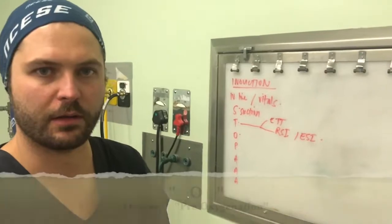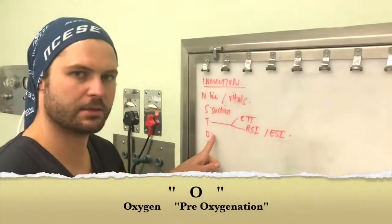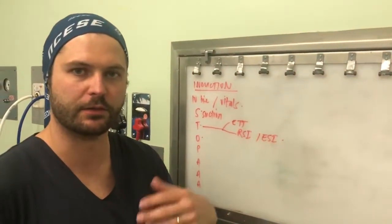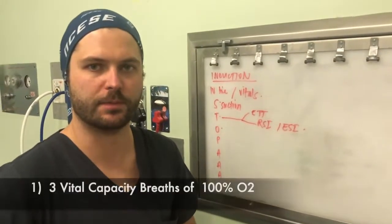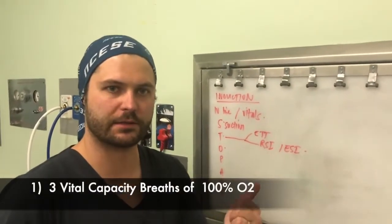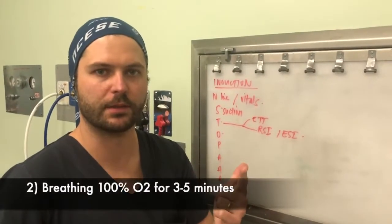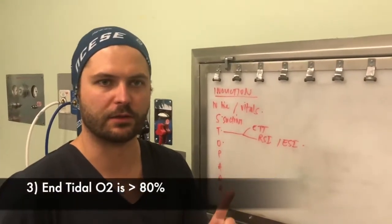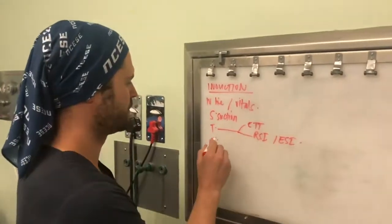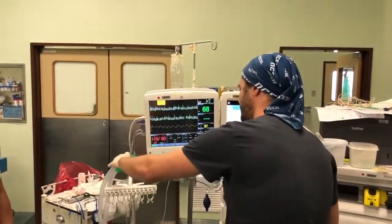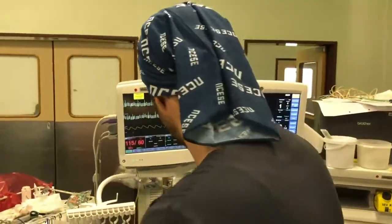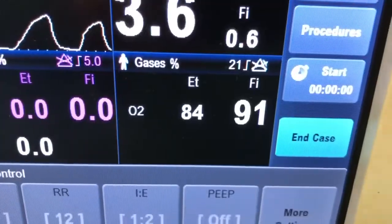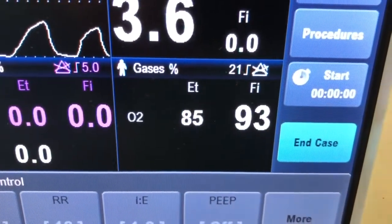With regards to the O in the STOP mnemonic — oxygen — we need to pre-oxygenate our patients. There are three methods to pre-oxygenate patients to recruit the functional residual capacity: the first being three vital capacity breaths of 100% oxygen; the second being breathing 100% oxygen for 25 minutes; and the last being to ensure your end-tidal oxygen is more than 80%. I'll pre-oxygenate with 100% oxygen, holding the mask gently while the patient is awake, to an end-tidal oxygen of more than 80%.